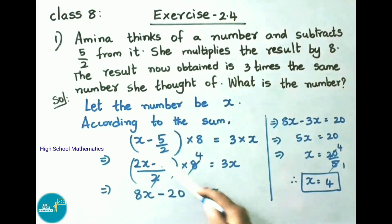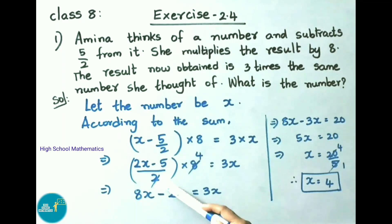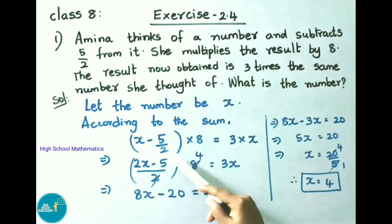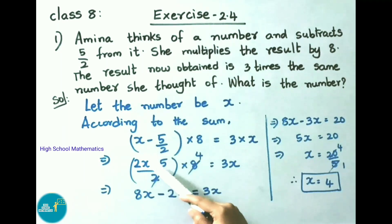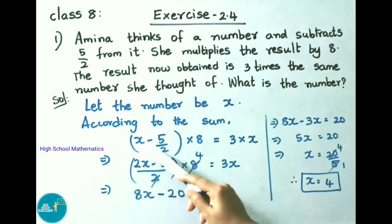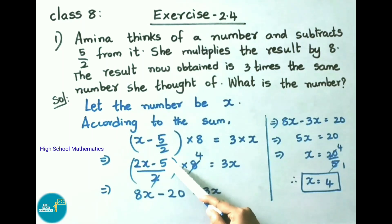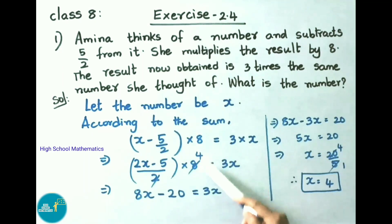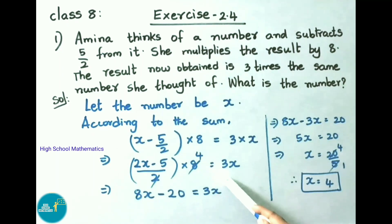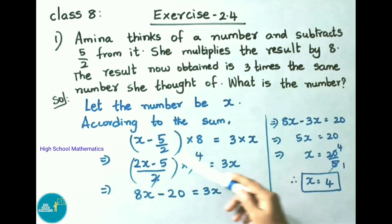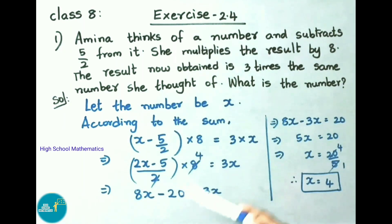For (x − 5/2), we take the LCM, which is 2. After cross multiplication: (2x − 5)/2 × 8 = 3x. Simplifying, multiply through: 4 × (2x − 5) = 3x, giving us 8x − 20 = 3x.